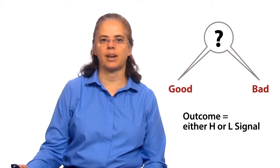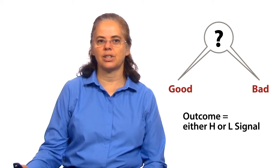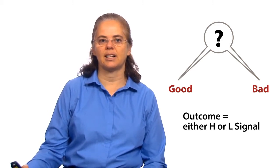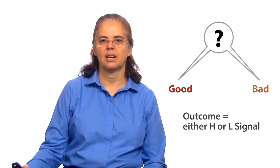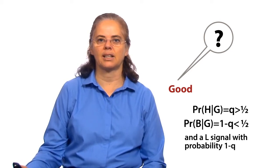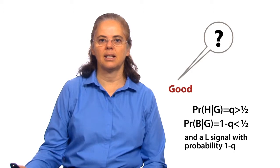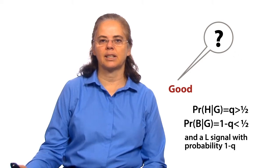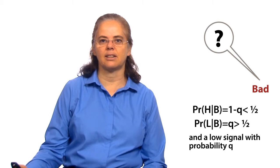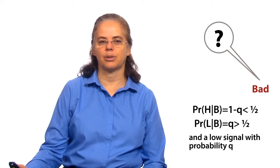Unfortunately, your research is not perfect. Even if the product is good, you may end up with a negative impression, and even if the product is bad, you might get a good impression. But your research is more likely to result in a correct impression than an incorrect one. So we introduce another parameter q: the probability that you get the correct impression. You get a high signal on a good product with probability q — more than half — and a bad impression even on a good product with the smaller probability 1 minus q. Similarly, if the product is bad, you get a high signal with probability 1 minus q, and a bad impression with the higher probability q.